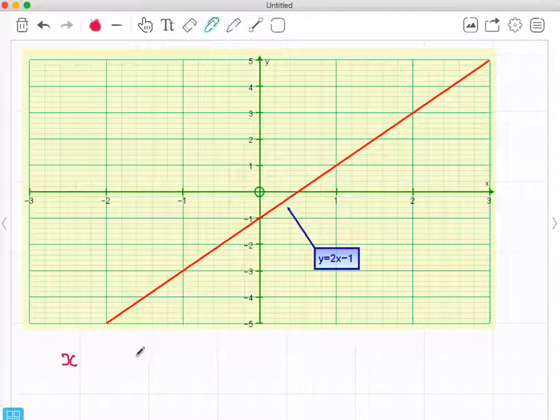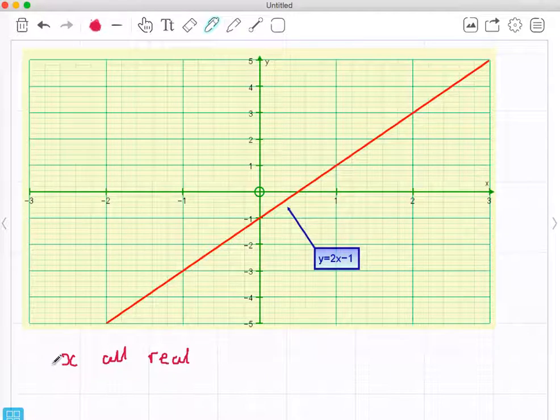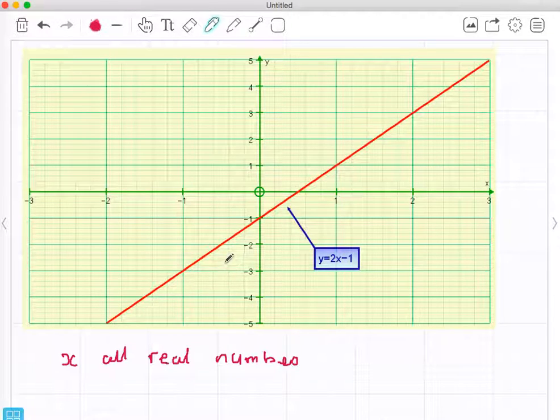So x can be any real number we can think of, and the y numbers that come out, they're also all the y numbers that come out. That's because this is a straight line that just carries on forever, even though we don't see the whole graph. All the real numbers can go in x and all the real numbers can come out for y.